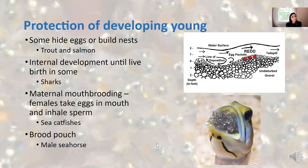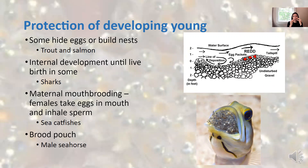Protection of developing young: most fish do not spend time and energy protecting their developing young, but some do. Some will hide their eggs or build nests - trout and salmon are examples. Some have internal development until the young are born, like the sharks we just discussed. Maternal mouth brooding is a pretty cool example: females take the eggs into their mouth, inhale sperm so the eggs are fertilized while in the female's mouth, and the eggs develop there, protected, until they hatch and the live young swim out. Sea catfish are an example of this.